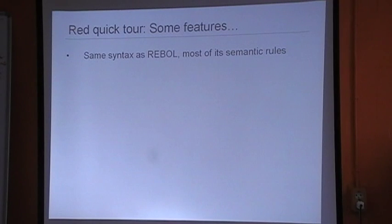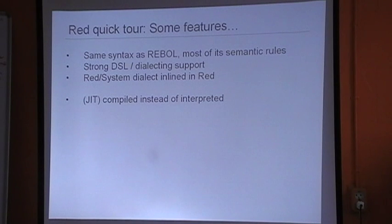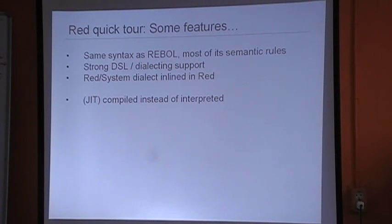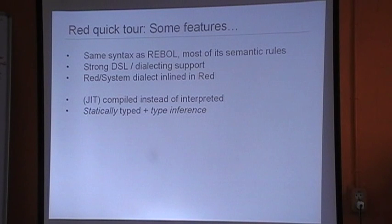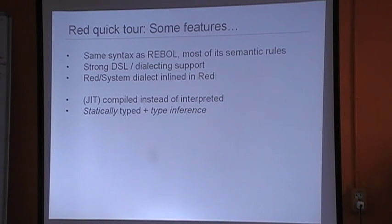As a reminder, Red is pretty much the same as Rebol — it already uses the same syntax and the semantic rules will be pretty much the same. It will also feature strong DSL and dialect support. The main difference from Rebol is that Red is compiled while Rebol is interpreted. Another feature is that Red is statically typed, though I've put this in italics because the more I advance, the more I think this is not the right choice. A mix of static and dynamic typing is probably better.